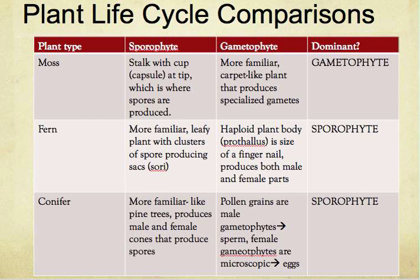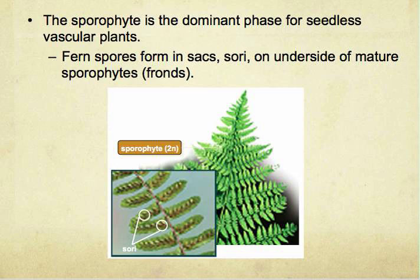To end this section and before we start the next one, we covered moss, fern, and conifer, and listed the dominant groups, gametophyte, and sporophyte phases in a comparison between the plants. Now, in the new section: the sporophyte is the dominant phase for seedless vascular plants.